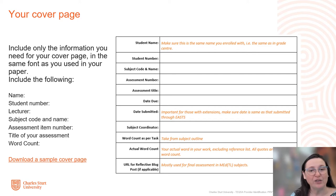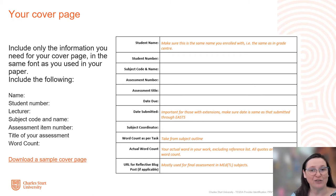For the word count, you need to include two things: the word count as it is set out in the task, and the actual word count that you have submitted. So if the task is asking you to submit 3,000 words and you've written 2,890, then you need to include the word count as per task — 3,000 — and in the second box, 2,890, which is your word count.